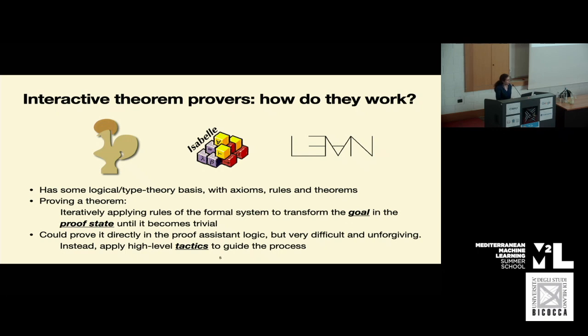So how do these proof assistants work? They typically have some logical or type theory basis, and proving a theorem amounts to applying rules of the formal system to transform the goal, which starts out as the theorem itself in the proof state, until it becomes trivial. These proof assistants provide high-level tactics like induction and reflexivity to help guide the process.